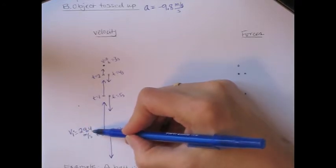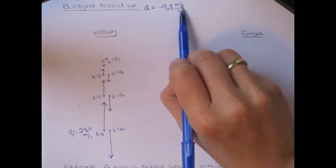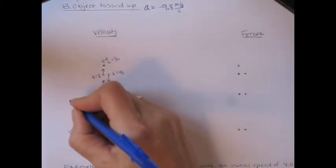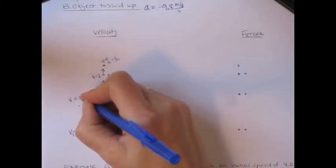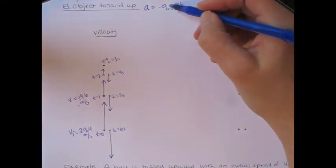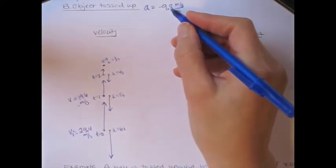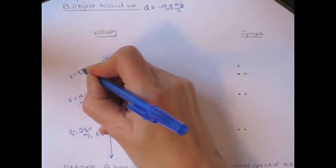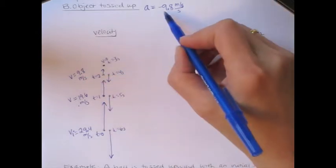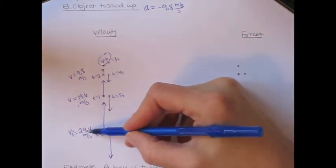At t equals zero we have a velocity of 29.4 meters per second. After one second, the velocity will have changed by negative 9.8 meters per second, giving a new velocity of 19.6 meters per second — still positive, still moving upward. After another second, it decreases by another 9.8 to 9.8 meters per second. After another second, 9.8 plus negative 9.8 gives a velocity of zero at the highest point. Now you can see why I started with 29.4 meters per second.